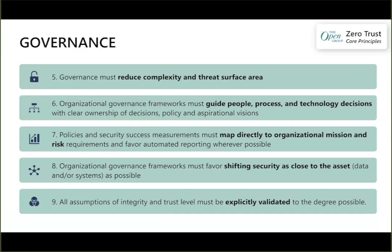Complexity creates confusion, and confused people do not make good decisions. Governance must reduce complexity and continuously reduce the threat surface area. The governance framework should guide people, process, and technology — language lifted directly from the original Jericho Forum — with clear ownership of decisions, policy, and the aspirational vision. Governance helps people make good decisions as fast as possible, taking 'it depends' out through decision ownership, clear policy, and aspirational vision to bring clarity.